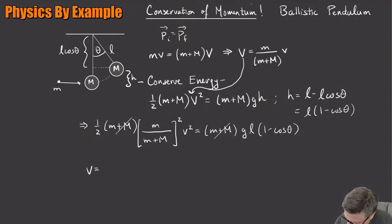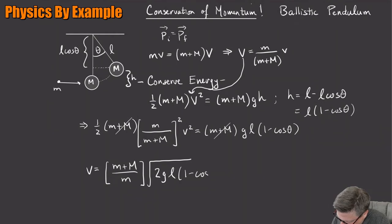If I push this, I'm going to move the two over to the other side. So it's going to be M plus big M over a little M, times the square root of two G L one minus cosine theta. There we go.